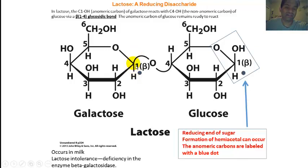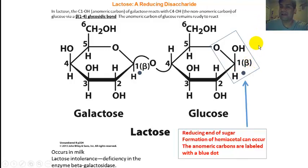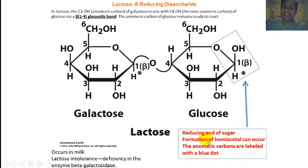Carbon 1 is the anomer, so we have to designate it as alpha or beta — it's the beta form that forms the glycosidic bond. There's nothing special about carbon number 4, so we don't have to designate that as alpha or beta. An important point: there is a free anomeric carbon on glucose — carbon number 1, designated by the blue dot — that can easily interconvert from beta to alpha or alpha to beta. It can form that hemiacetal intermediate and that free aldehyde, even though it's only 1% of the population, it can still react with a number of different reagents. We call this the reducing end because of the ability to form a hemiacetal which can react.